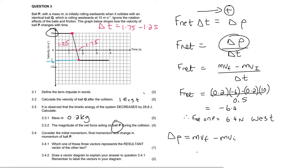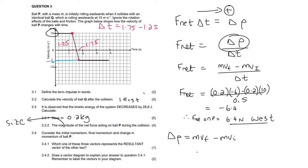They did say magnitude — when they say magnitude, that only means the size, so you don't technically need to give the direction. You would be fine just saying 6.4 Newtons. When they say magnitude, they're not worried about the direction. But for those who want to know, the direction is west.